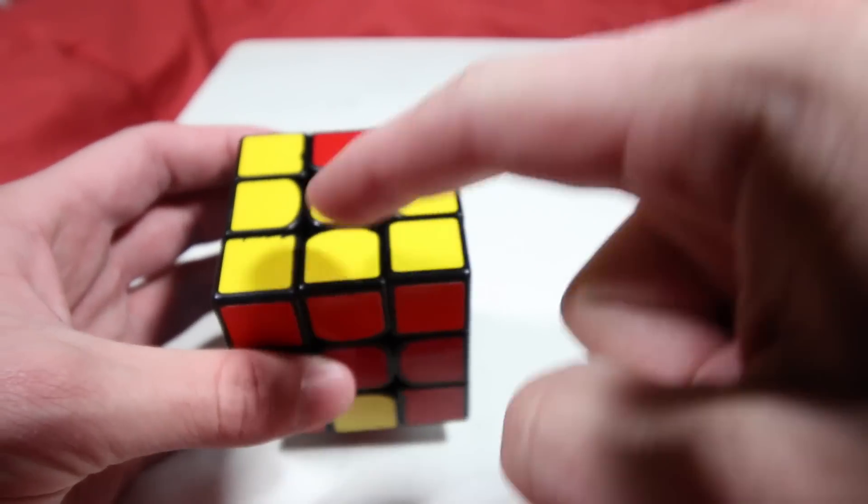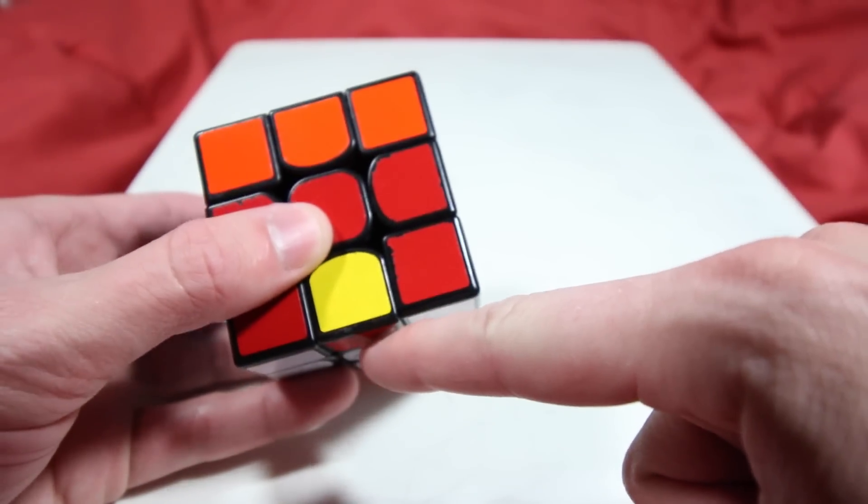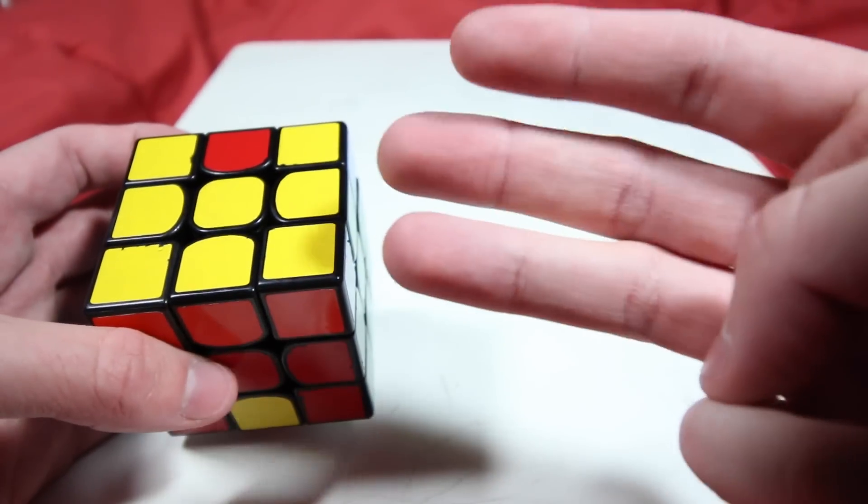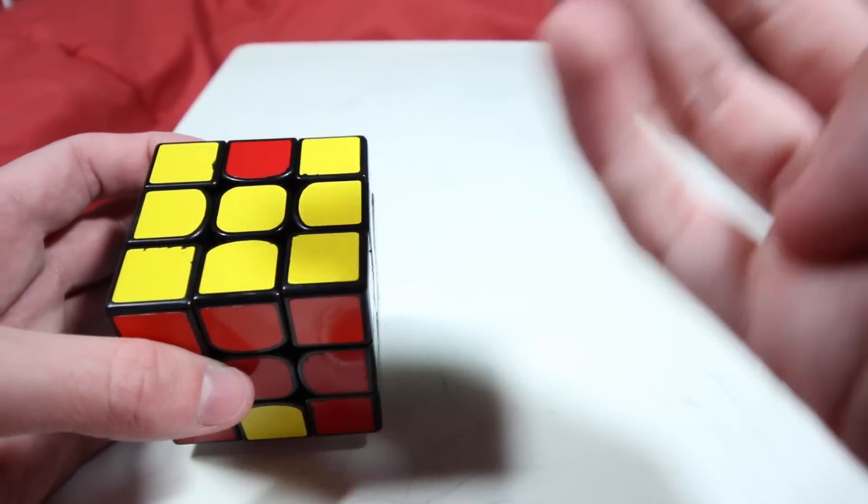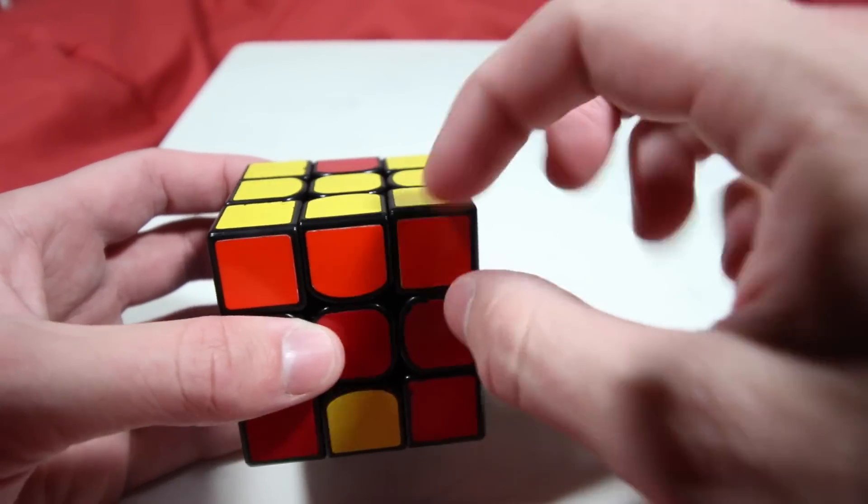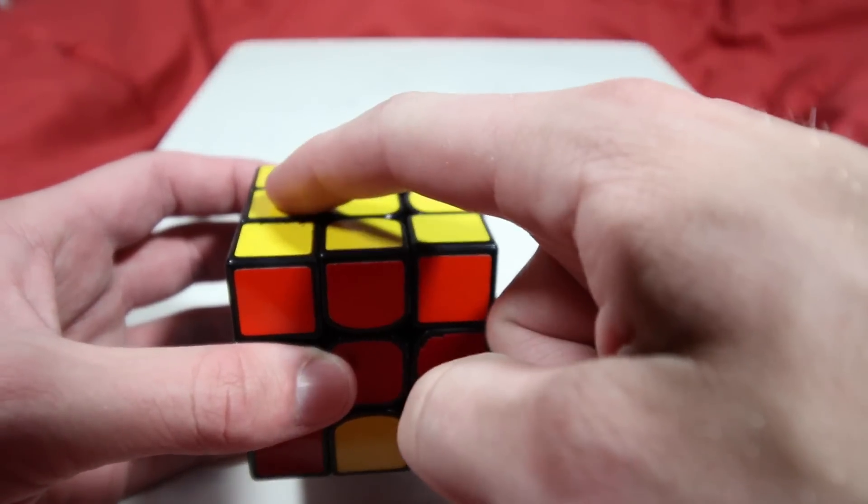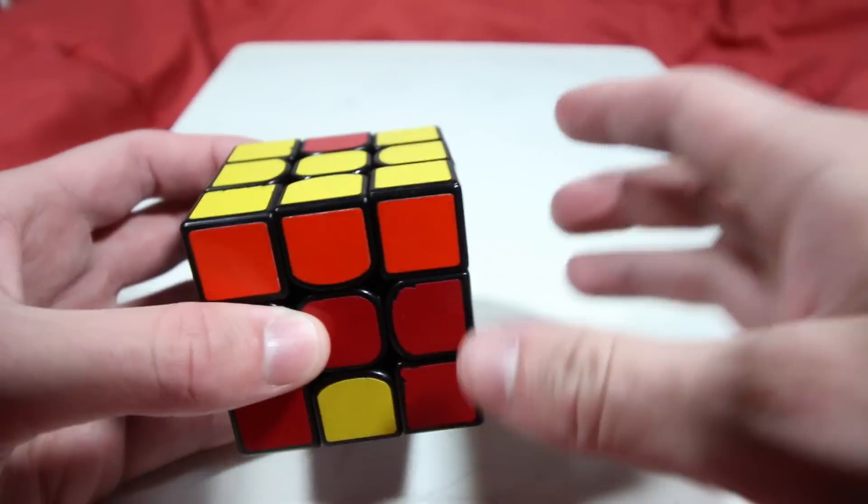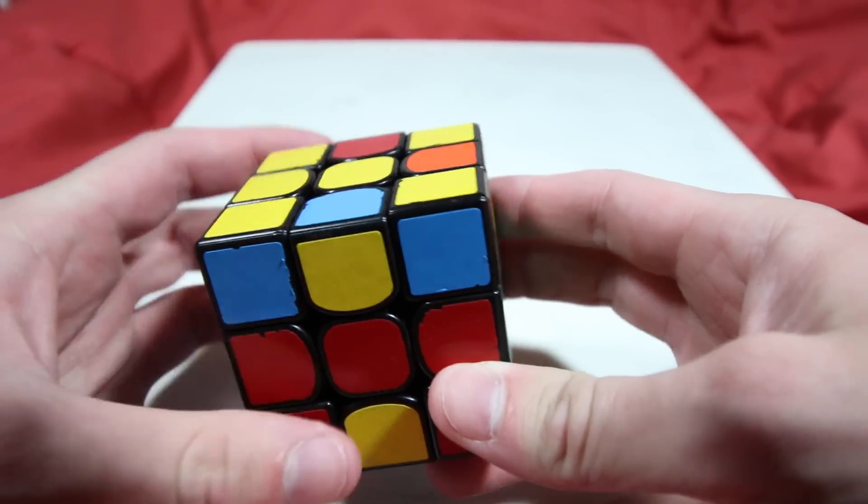So the next step is to orient edges, and we do this just like Roux. So knowing that M'UM or M'U'M, and again, don't learn those as algs, just show what they do, will flip the four edges closest to you, everything but the UB edge, and it'll change their orientation.